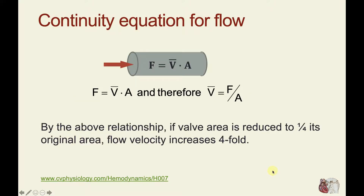Another fundamental concept we need to understand is based on the continuity equation for flow. The flow through a tube, or across a valve, is equal to the mean velocity of that moving blood times the cross-sectional area. So if flow is in milliliters per second, velocity would be in centimeters per second times the cross-sectional area in centimeters squared, giving flow in cubic centimeters or milliliters per second.